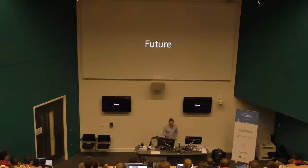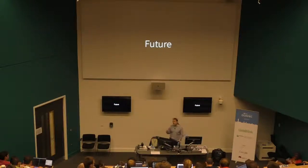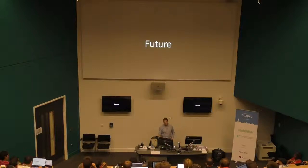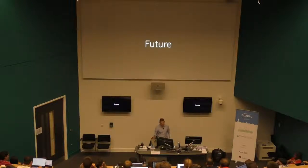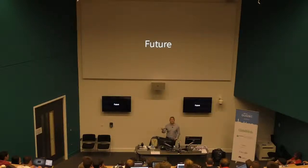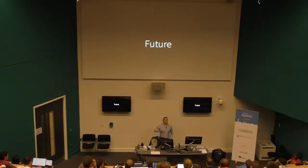Nothing has highlighted the fragility of that system more recently than this year in the UK. On the 22nd of March 2017, there was an attack on Westminster Bridge. Here in Manchester, a month later on the 22nd of May, there was a bombing at the Manchester Arena. Then just a few weeks later on the 3rd of June, there was the London Bridge attack. The response from our previous Home Secretary and now Prime Minister was to say there should be no safe space for anyone we don't like to hide — essentially repeating her previous commitment to ban encryption.